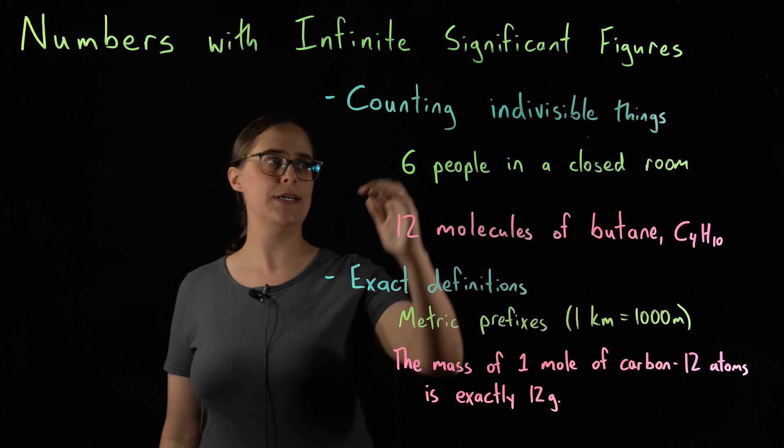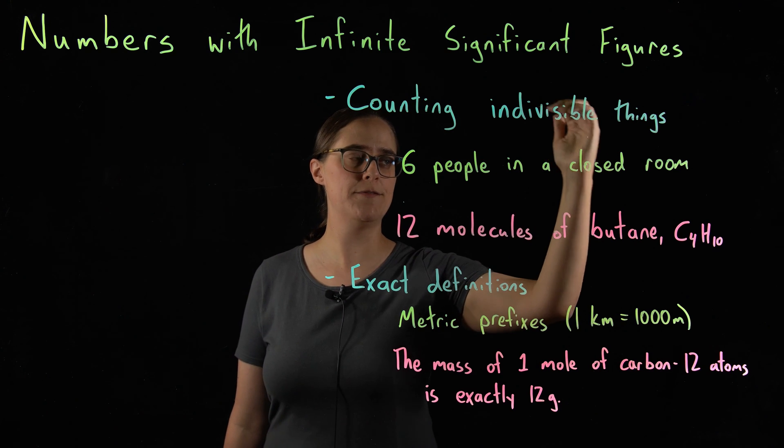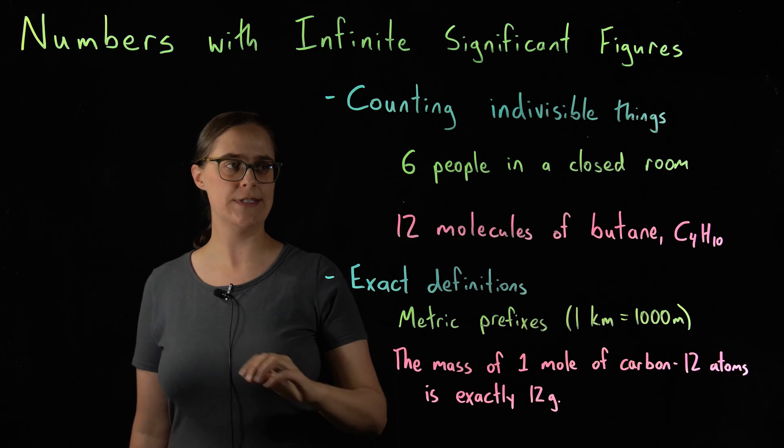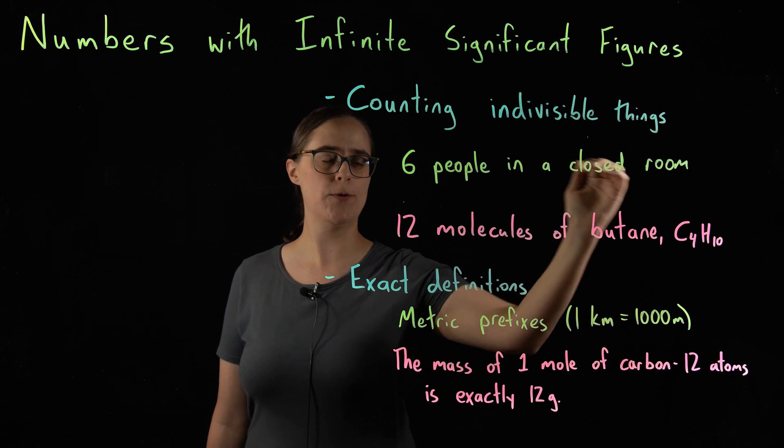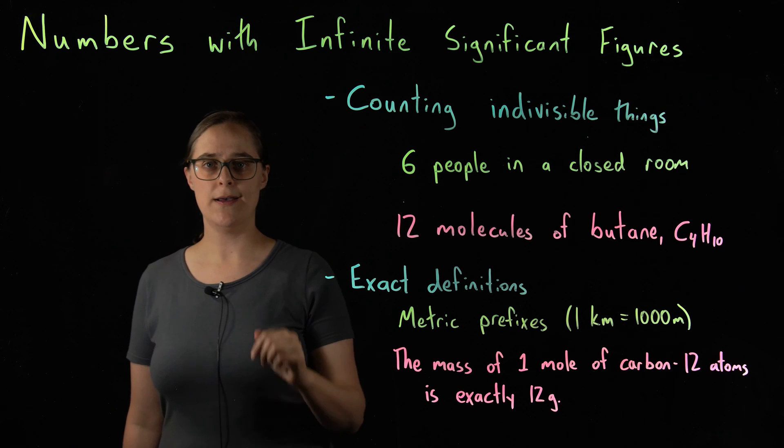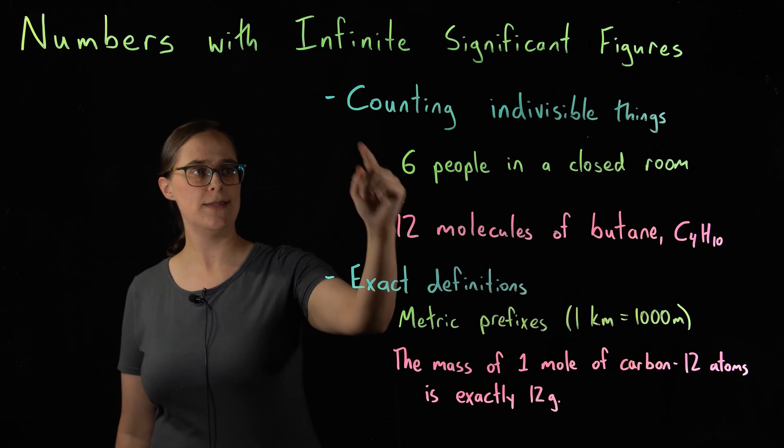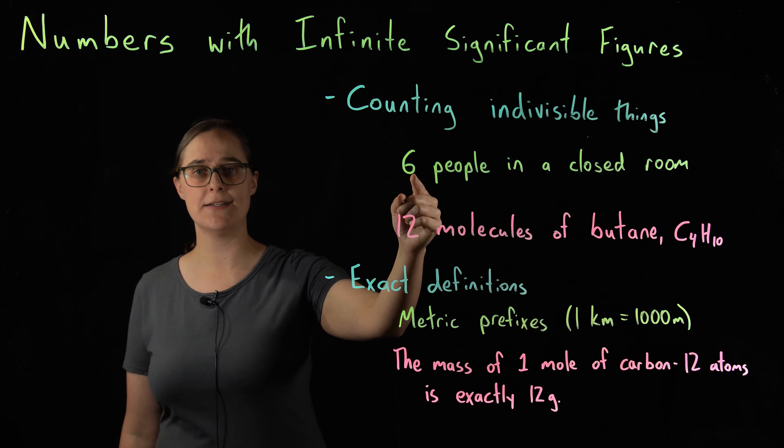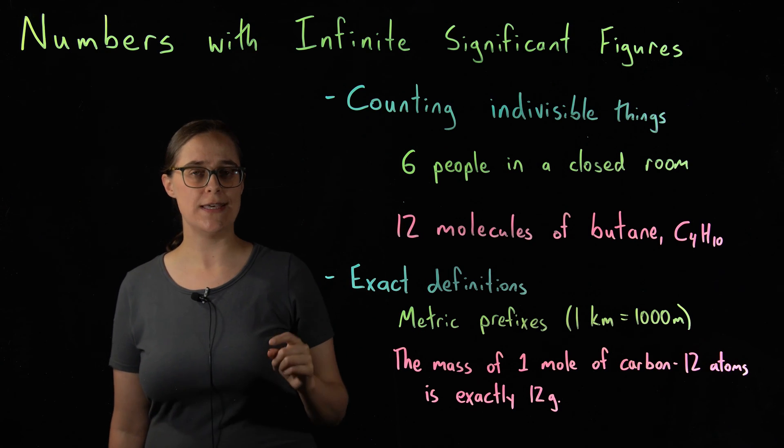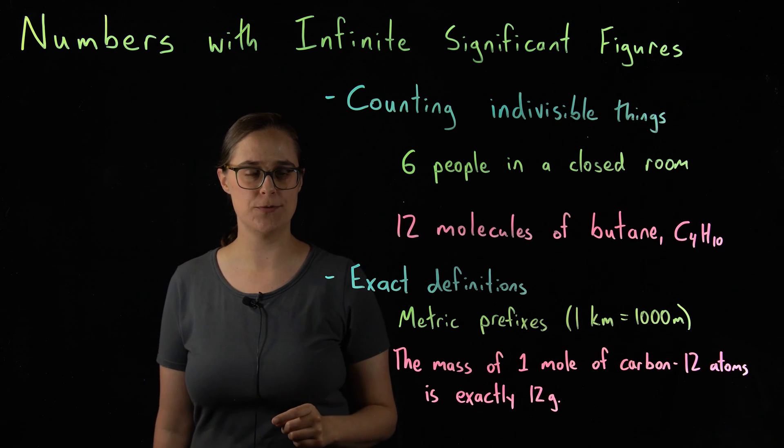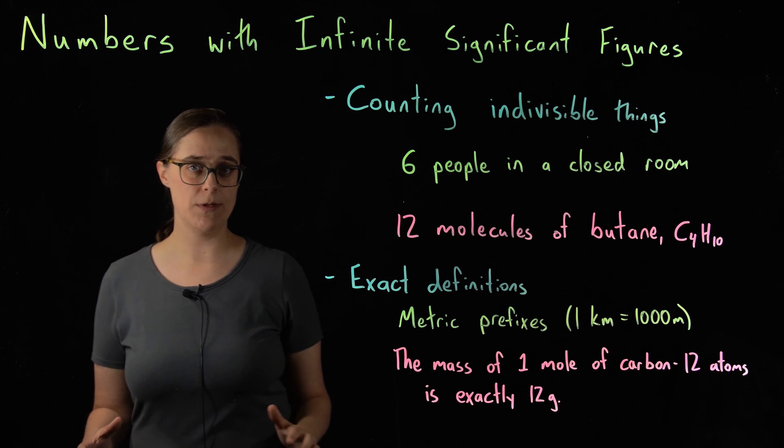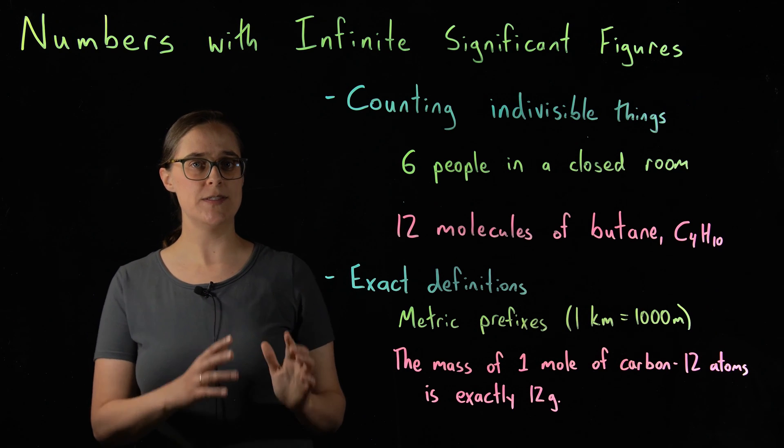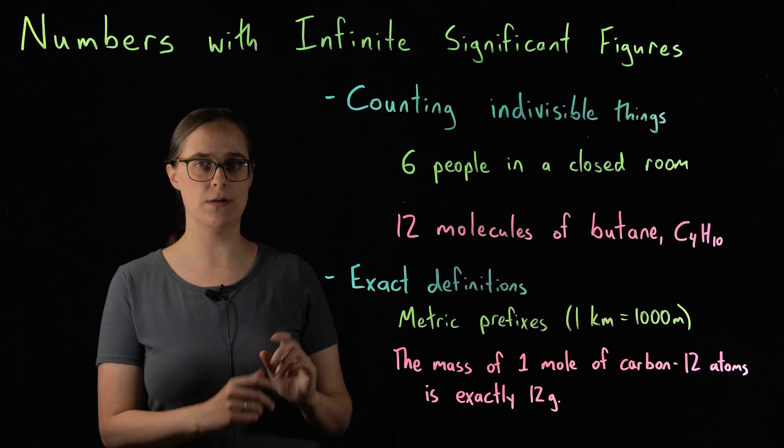So exact numbers come from counting indivisible things. For example, there are six people in a closed room. I really hope that this number six is an exact number. If you actually have 6.2 people in a closed room, you have a major problem on your hands, and that is probably the direction that the problem is going in.